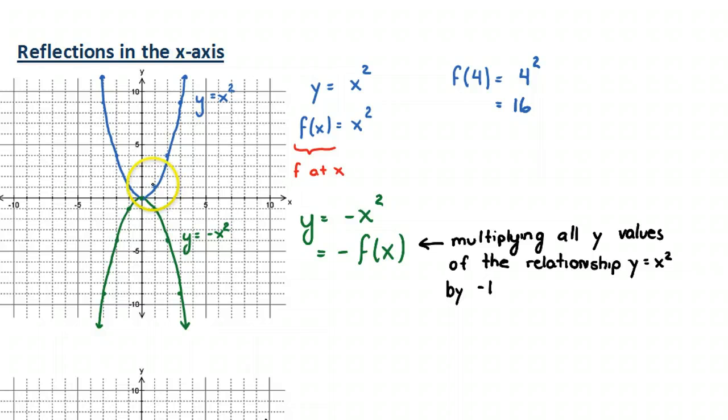And that means that if here I have the point 1, 1, if I multiply that y value by negative 1, I have 1, negative 1. Here I have the point negative 2, negative 4. Here I have the point negative 2, negative 4.